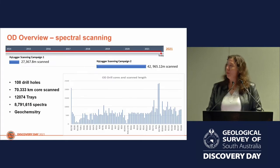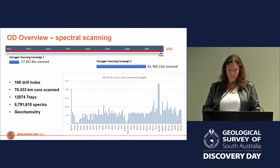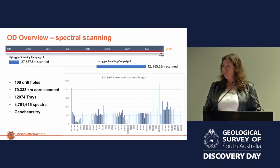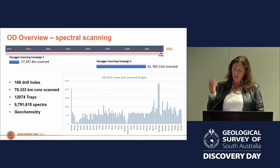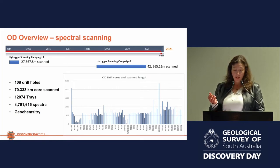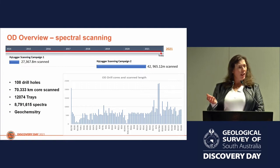We've spent approximately three years scanning drill holes from Olympic Dam. It's now 108 drill holes and 70 kilometres — that's a lot of core trays — but more impressively, that's almost 9 million spectra. The beauty of this data is that it can be down-sampled to the interval of interest. For example, the assays we've been provided were taken every five metres, and when down-sampled to five metres, we're left with only 1,758,000 spectra.